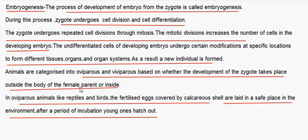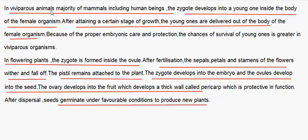Animals are categorized into oviparous and viviparous based on whether zygote development takes place outside or inside the female parent's body. In oviparous animals like reptiles and birds, fertilized eggs covered by calcareous shells are laid in safe places; after a period of incubation, young ones hatch out. In viviparous animals — the majority of mammals including human beings — the zygote develops into a young one inside the female body, and after attaining a certain stage of growth, the young one is delivered. The chances of survival are greater in viviparous organisms.